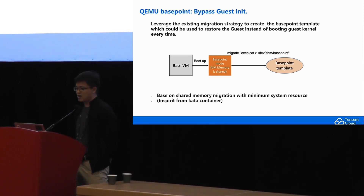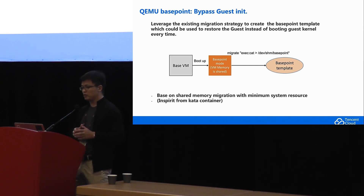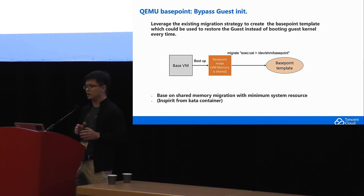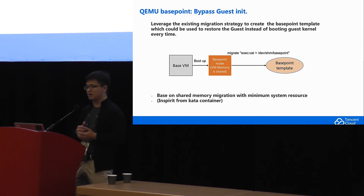First, let's look into how our solution bypasses the guest init. The idea behind our solution is very simple. We leverage the current mechanism of migration. We use migration to do a snapshot of our running VM so that a newly created VM can directly restore from the snapshot. In order to speed up the scheme, we use shared memory, which can be backed on huge TPFS or even on tmpFS as tmpFS gets support for transparent huge pages.